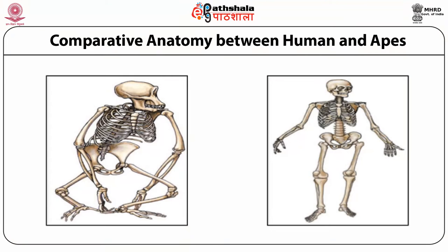Before starting to discuss about the comparative anatomy between man and apes, let's try to see this figure. From this figure, we try to find out the morphological differences in the skull of man and apes. We also find some differences in the ribcage and in the vertebral column, in the pelvic girdle regions, and also marked differences in their forelimb and hind limb.